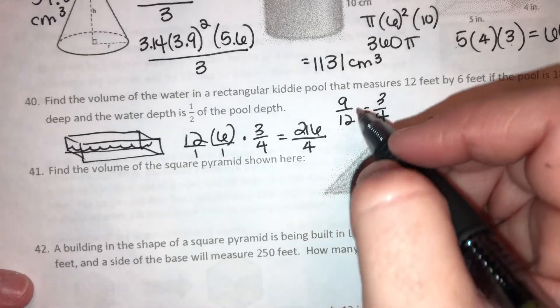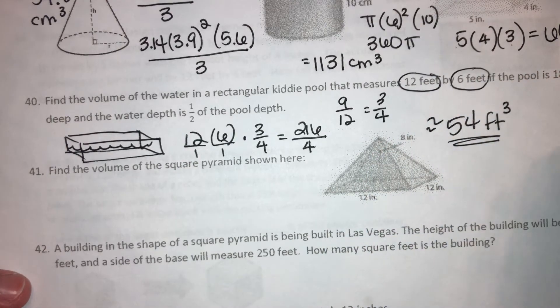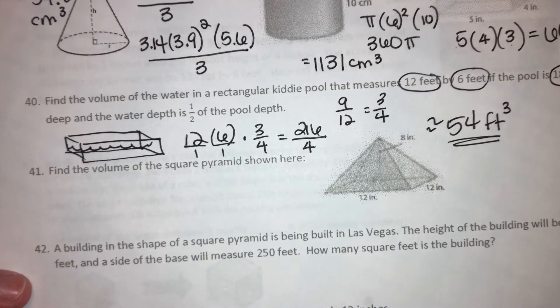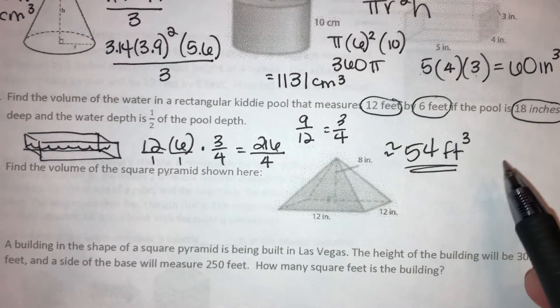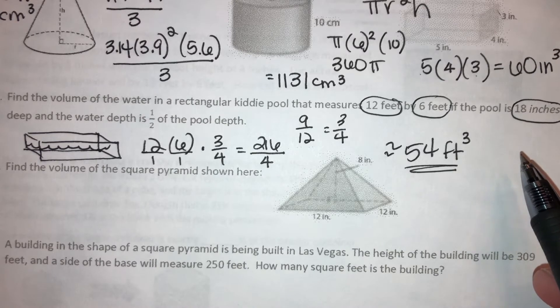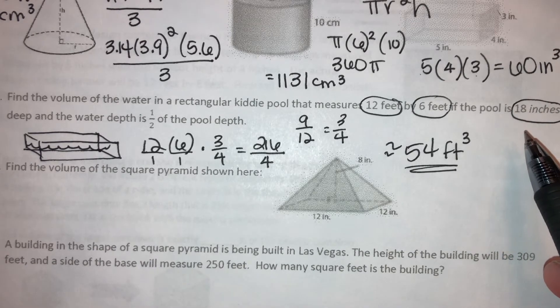So 12 times 6 is 72. 72 times 3 is 216. So we'll have 216 on top. And then 1 times 1 times 4 is 4 on the bottom. 216 divided by 4 equals 54. So we're looking at, I'll write it over here, about 54, it's in feet, and it's cubed because it's volume, right? So pay attention to where it says it's 12 feet by 6 feet, but then the water's only 9 inches deep. You have to put that in terms of feet. That's a foot and a half, and then half of that is filled with water. So we're looking at the volume of the water. Half of a foot and a half is 3 quarters of a foot.